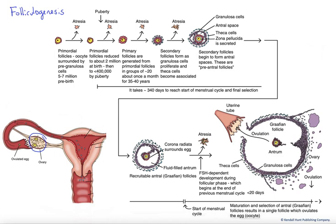The culmination of that process is the release of an ovulated egg, shown here. It's taken up into the uterine tube and delivered via ciliary action along that tube where fertilization can take place. If fertilization does take place, implantation can occur in the uterus and a pregnancy can develop.